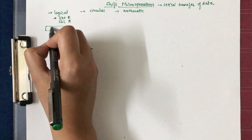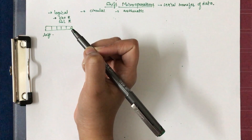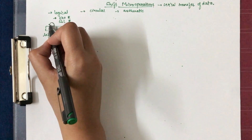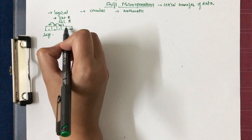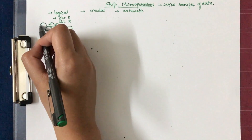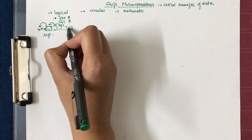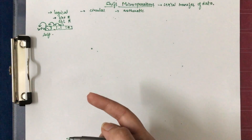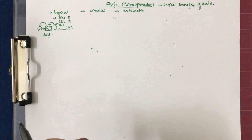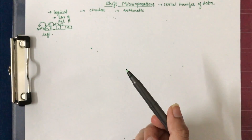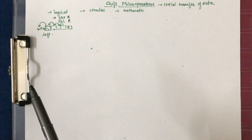For example, if we have a register and perform a left logical shift, each bit is shifted one position to the left — the leftmost bit is lost and the last position is padded with 0. Similarly, in a logical shift right, the rightmost bit is lost and the leftmost position is padded with 0. Therefore, a disadvantage of logical shift micro-operations is the loss of information.